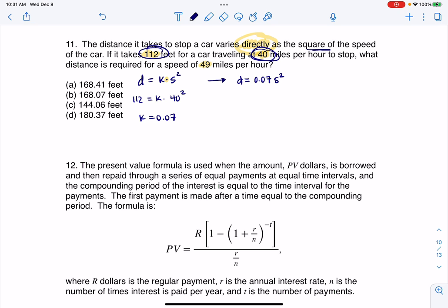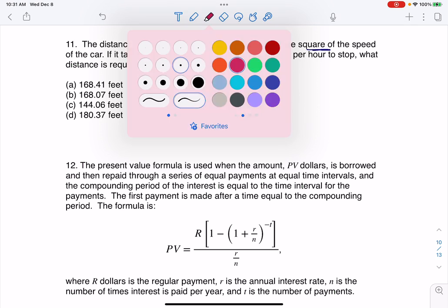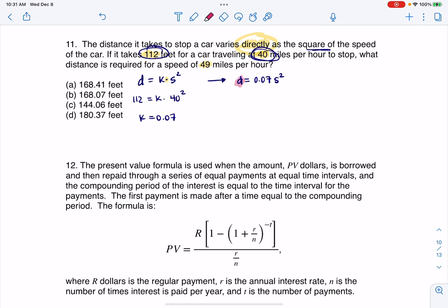And then the rest of this problem is they either gave you a D value, and let me use my highlighter so you can see what I'm referencing. They either gave you a D value or a distance value, and they're asking you to find the speed, or they gave you a speed value, and you're asked to calculate the distance.